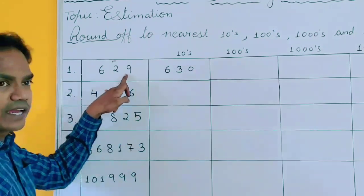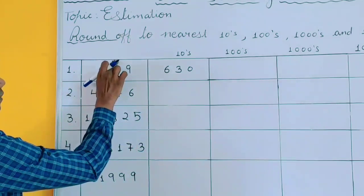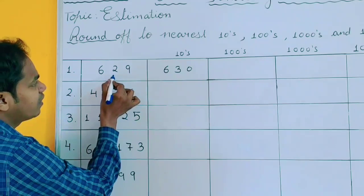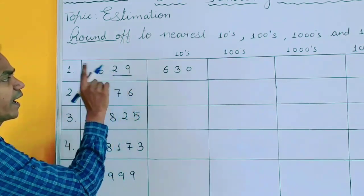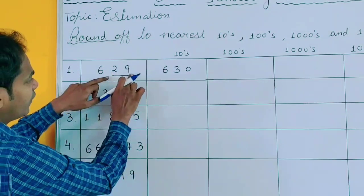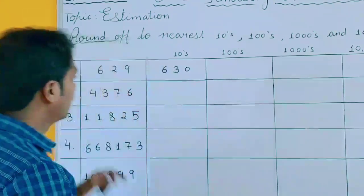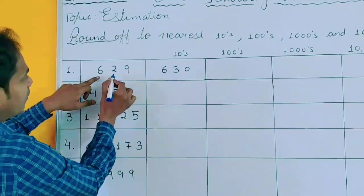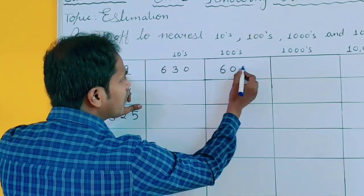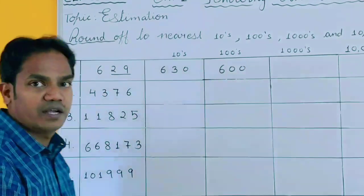The value you are checking will become 0. Now rounding off to 100: you will check the last two digits — the ones and tens place. If it is 50 or more than 50, you will do plus 1. But here it is less than 50, so this value will become 0 and there is no change in the hundreds value.